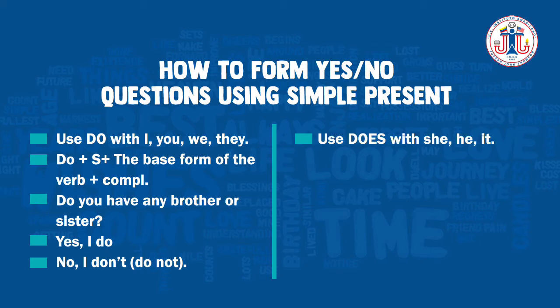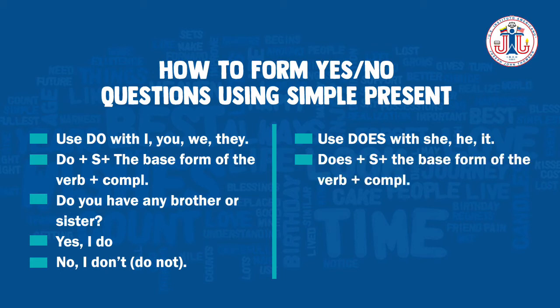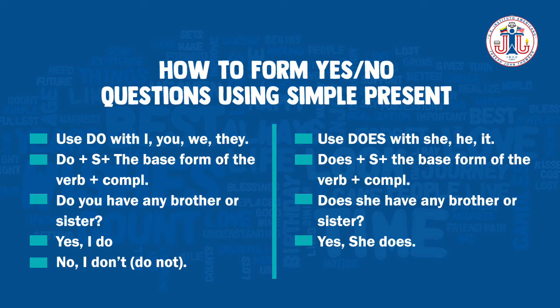Use does with she, he, or it: does plus the subject plus the base form of the verb plus the complement. For example, 'Does she have any brother or sister?' If the question is affirmative: 'Yes, she does.' Or if it's negative: 'No, she doesn't' or 'No, she does not.'